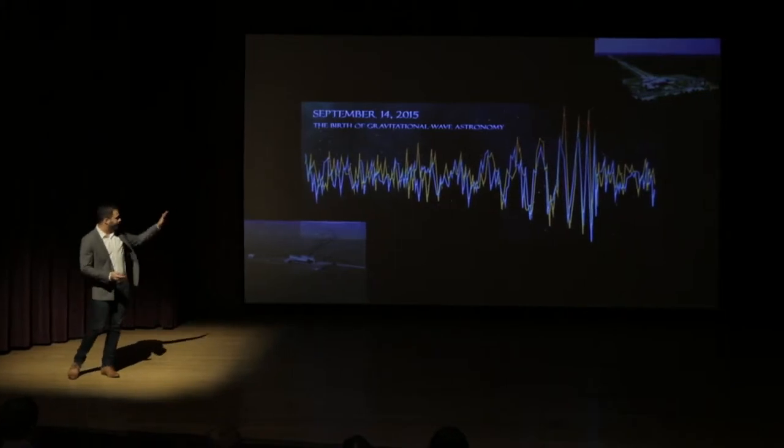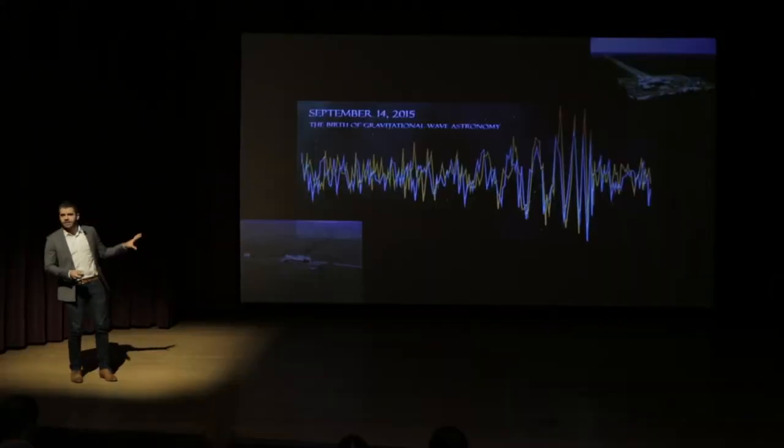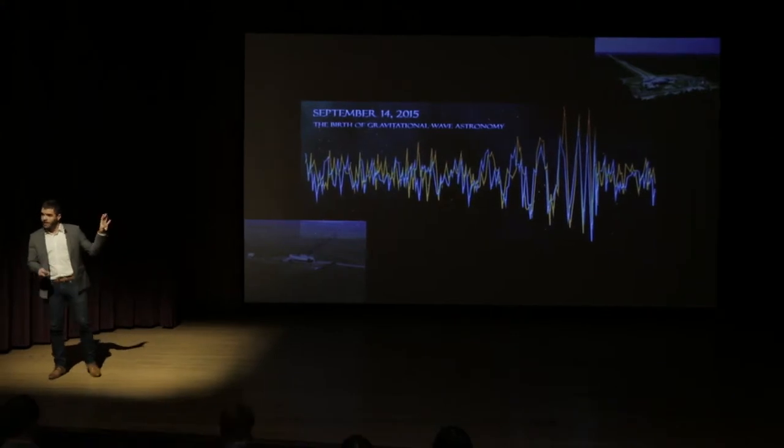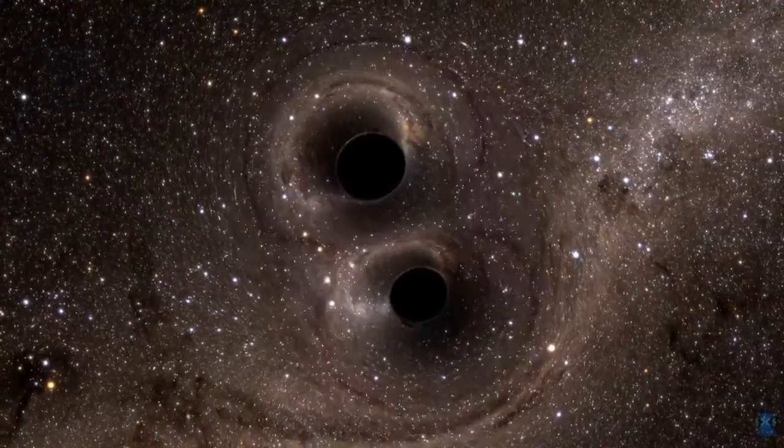Now, with this signal itself, we can tell lots of things about the system that generated it, such as how far away it was. But we can also tell how big these black holes were, how fast they were actually moving. And just from this signal, we can reconstruct a realistic visualization of what this collision would have looked like if we were sitting right at its doorstep. And that's what this simulation right here is showing you.